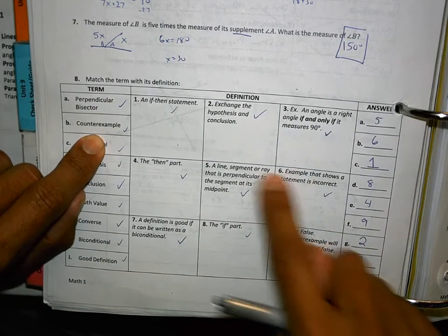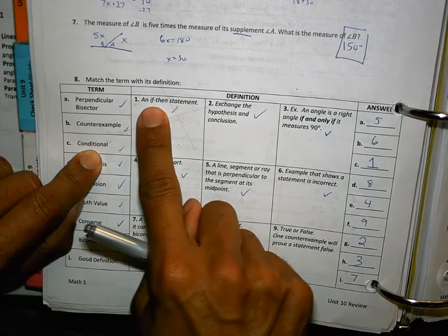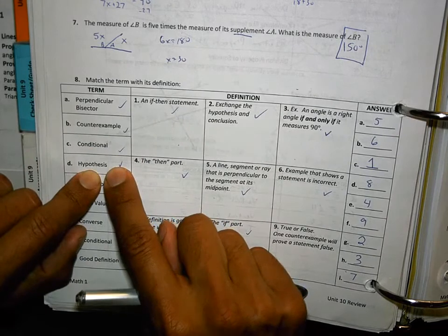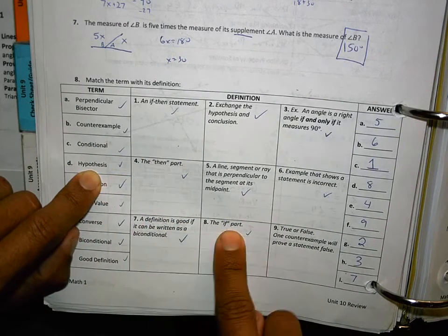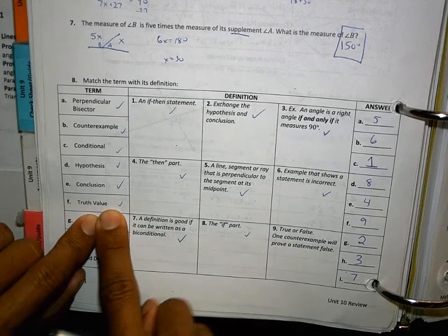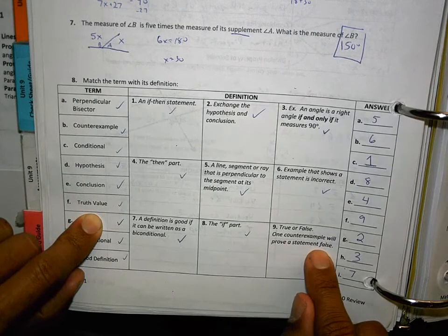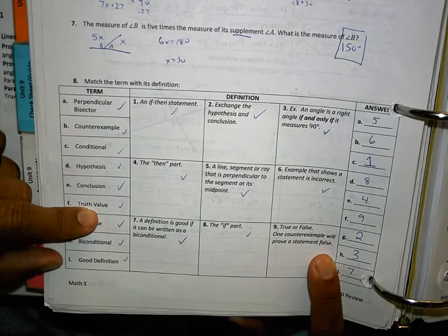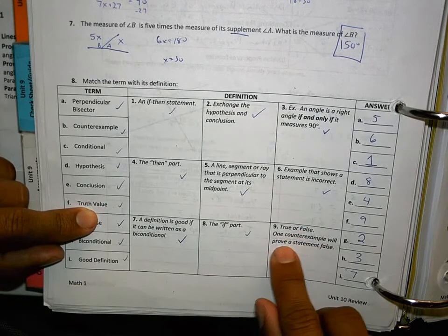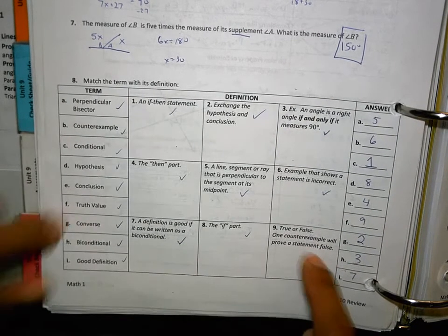B, a counterexample is number 6. An example that shows a statement is incorrect. C, a conditional is number 1. It's conditional if it's an if-then statement. The hypothesis is everything that follows the if. That's number 8. The conclusion is the then part. The truth value, I don't remember if we wrote this one down or not, is number 9. One counterexample will prove a statement false. The truth value is, is it always true? What's its truth value? Is it always true? True or false? One example will prove a statement false. I want you to know that for a truth value if I didn't talk about it already. I don't think that's a priority of mine, but just in case it shows up.